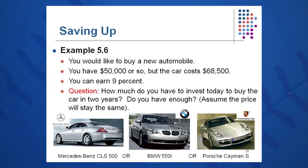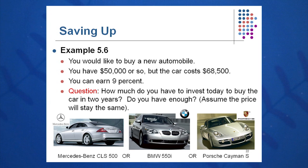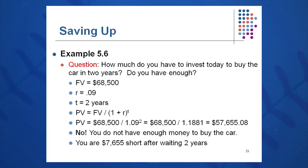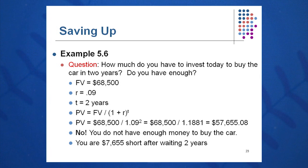Here's another good example of the use of this lump sum present value equation. If you want to buy a new automobile, you have $50,000 saved up. The car costs $68,500 and you can earn 9% on your money. How much do you have to invest today — keyword being today — to buy the car in two years? Do you have enough money saved up? Assume the price will stay the same. Present value equals future value over one plus r to the t. At 9%: 68,500 divided by 1.09 squared gives me $57,655. So I need $57,655 in the bank to get it up to $68,500 in two years.